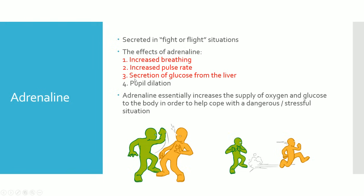The main effects are the first three: increased breathing allows more oxygen to be transported around the body, and increased pulse rate means muscles and the brain can get more nutrients like glucose and increase the rate of respiration. Essentially, adrenaline increases the supply of oxygen and glucose to the body to increase respiration and help us cope with a dangerous or stressful situation.